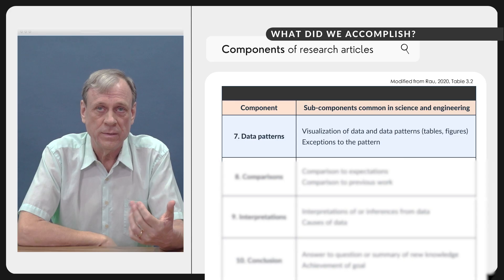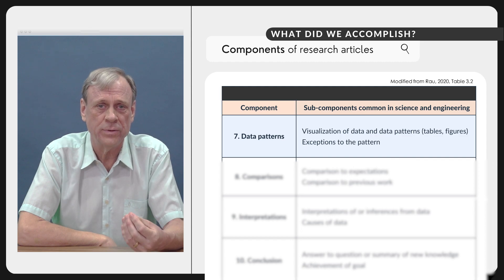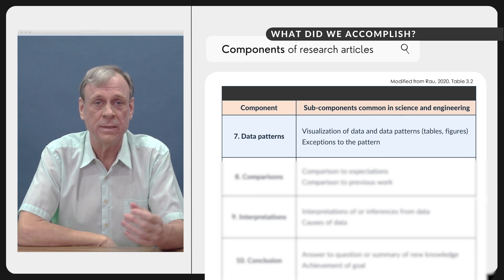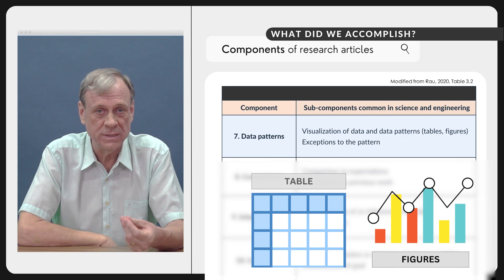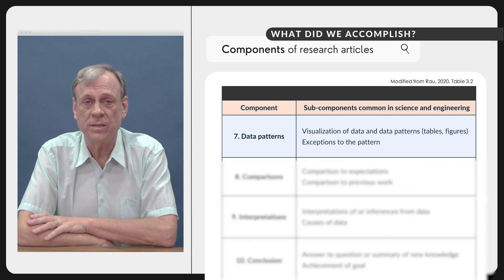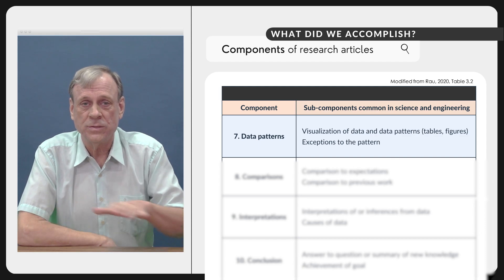This is the results and discussion of a typical IMRD paper, the data patterns. I use the term patterns because data by themselves are not very useful until you discern a pattern. And this is the reason that we often present the data in tables or figures because it makes it easier to see the pattern and exceptions to the pattern. If there are exceptions, those are very important as well. So that's basically the results portion of a paper.